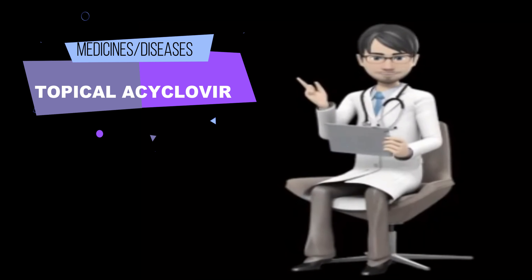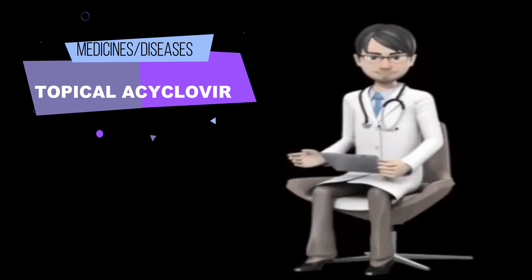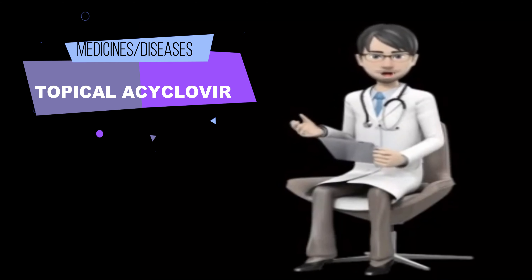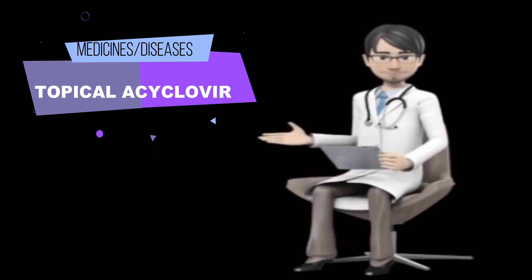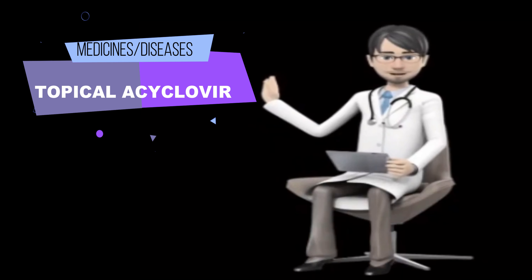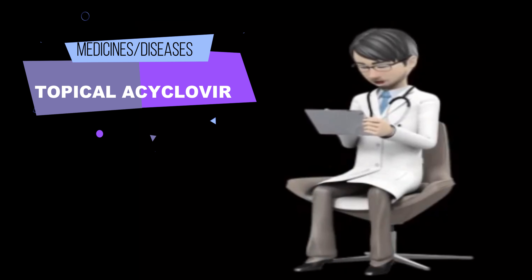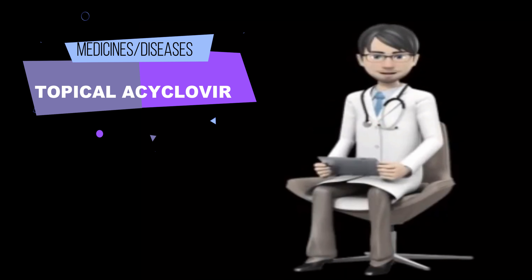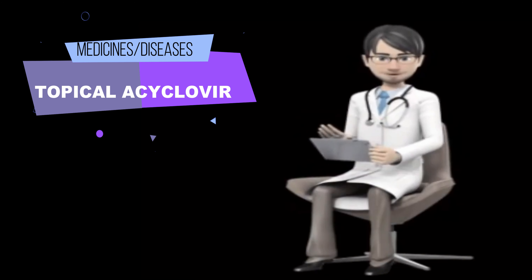To use acyclovir cream, follow these steps. Wash your hands. Clean and dry the area of skin where you will be applying the cream. Apply a layer of cream to cover the skin where the cold sore has formed or seems likely to form. Rub the cream into the skin until it disappears. Leave the skin where you applied the medication uncovered. Do not apply a bandage or dressing unless your doctor tells you that you should. Wash your hands with soap and water to remove any cream left on your hands.